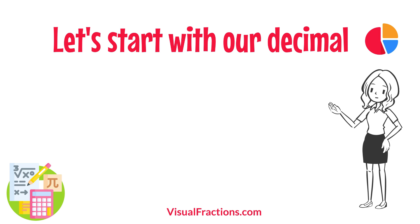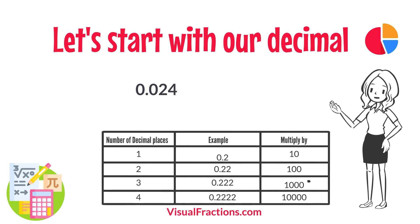Let's start with our decimal, 0.024. Notice there are three digits to the right of the decimal. This places it in the thousandth position.